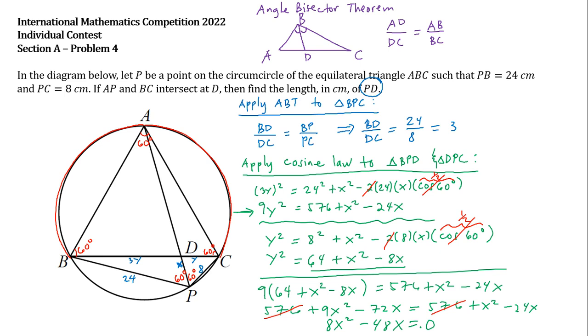And then we will now factor out 8X. If we factor out 8X, we will actually have 8X times X minus 6 equals 0, which implies that X can be 0 or X can be 6. But of course, X cannot be 0 because there is a segment. The segment exists and the measurement must be 6 cm. So PD, which is X, is equal to 6 cm. And this is our final answer. Thank you.